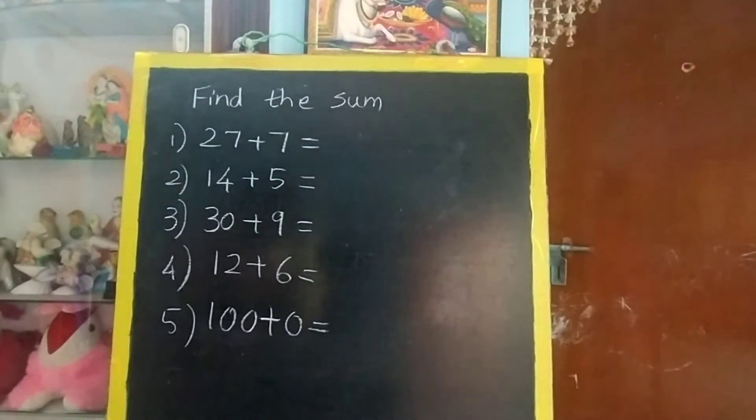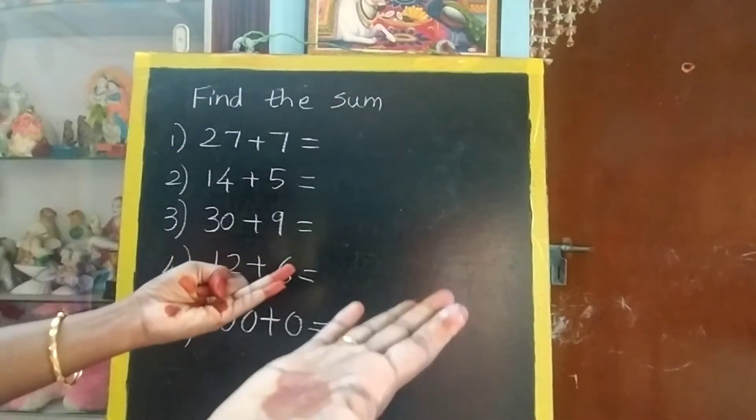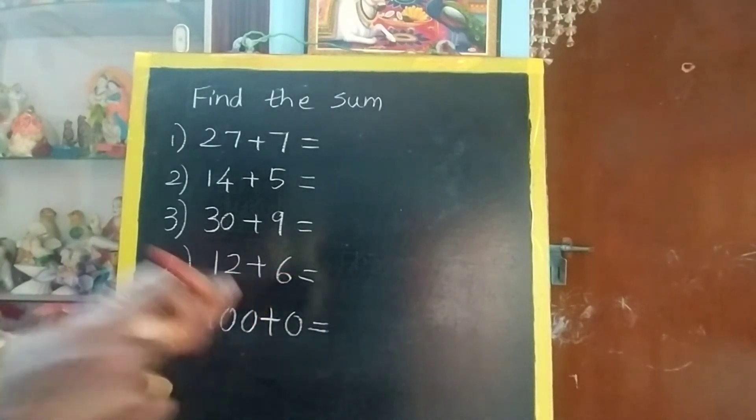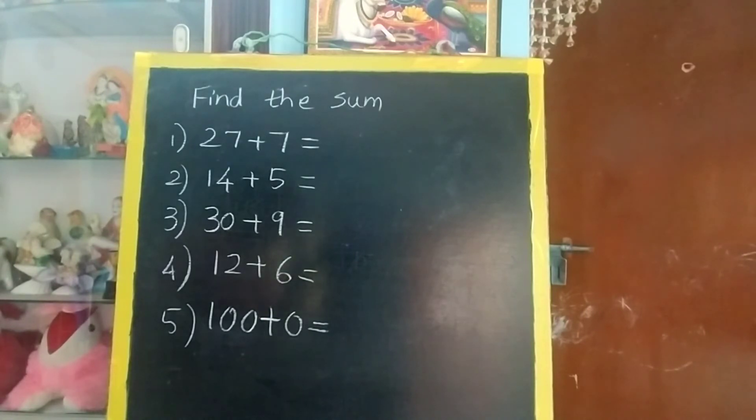But you should not say slowly, you should say faster in your mind. 27 in the mind, 7 in the finger. After 27, 28, 29, 30, 31, 32, 33, 34. The answer is 34.